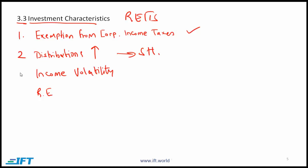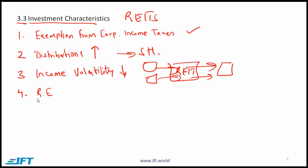The third important point is that generally income volatility is low. However, the retained earnings for a REIT would generally be low, since the money is flowing through to REIT investors. Since retained earnings are low, if a REIT wants to expand by purchasing or investing in new properties, it needs to issue new equity.